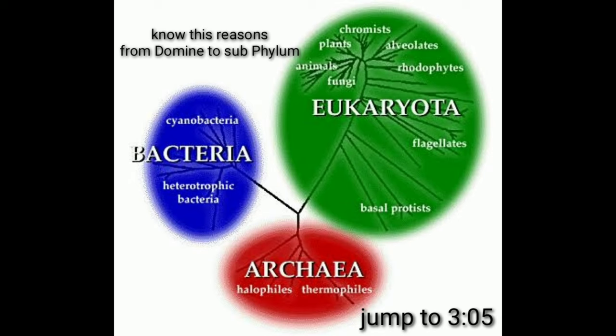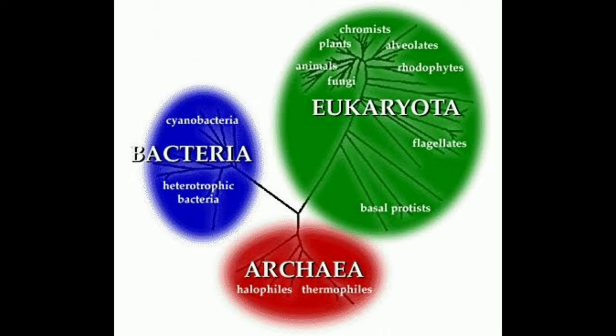What is a domain? A domain is a hierarchical order above kingdom. A popular scientist classified living cells into three types: prokaryotes, eukaryotes, and archaebacteria. Prokaryotes do not have a nuclear envelope — the genetic material floats free in the cytoplasm. Eukaryotes have a nuclear envelope and the genetic material is secured in the nucleus.